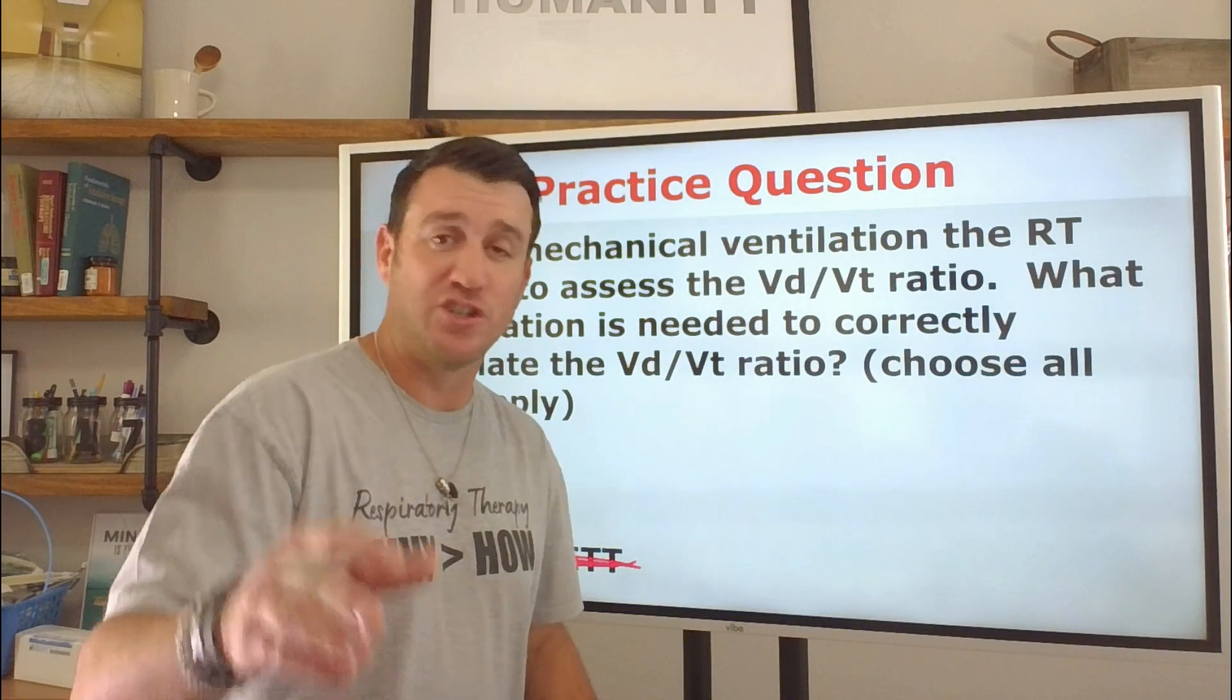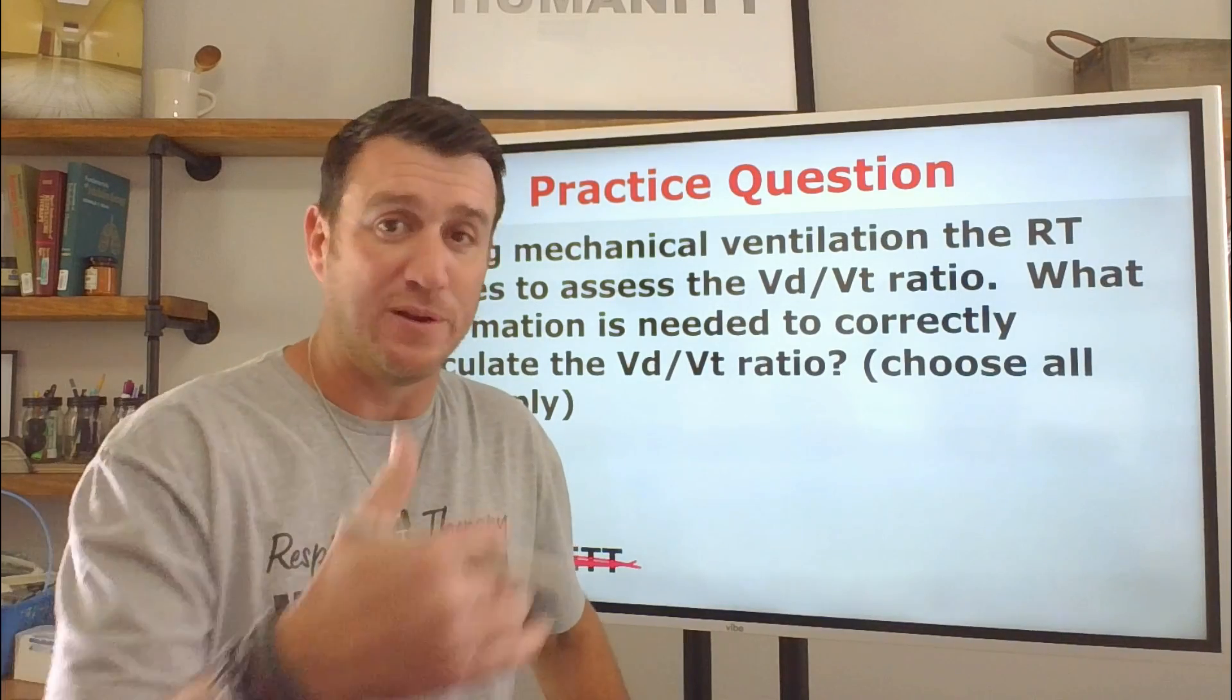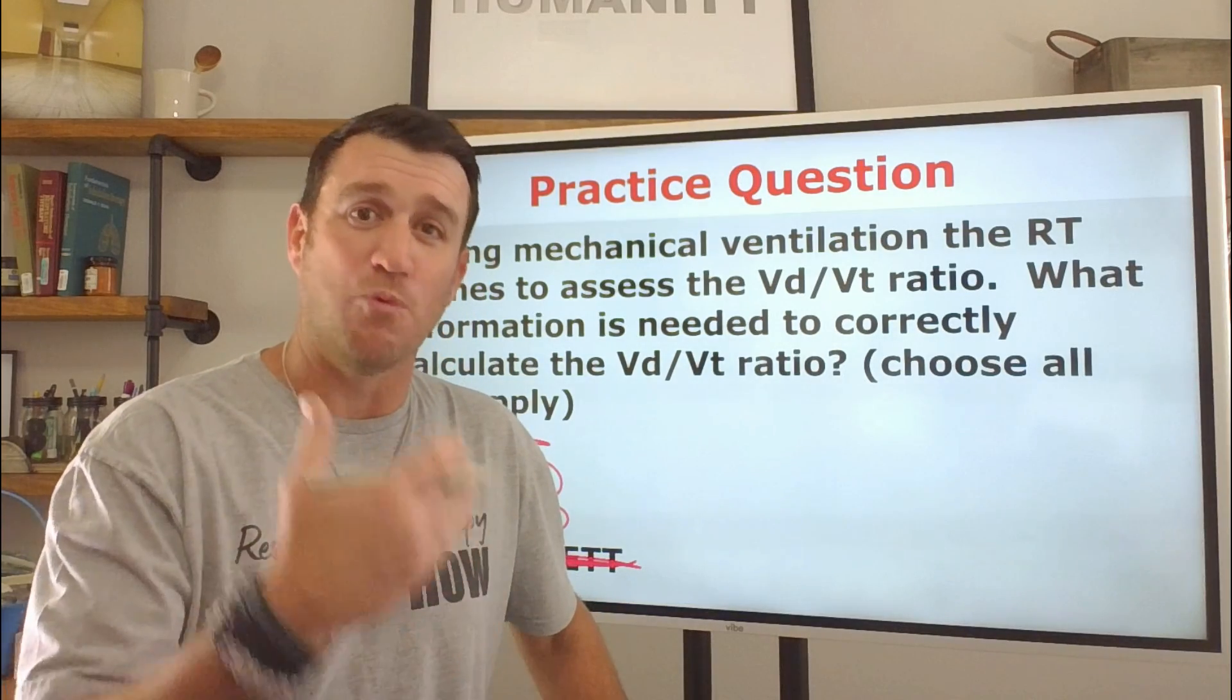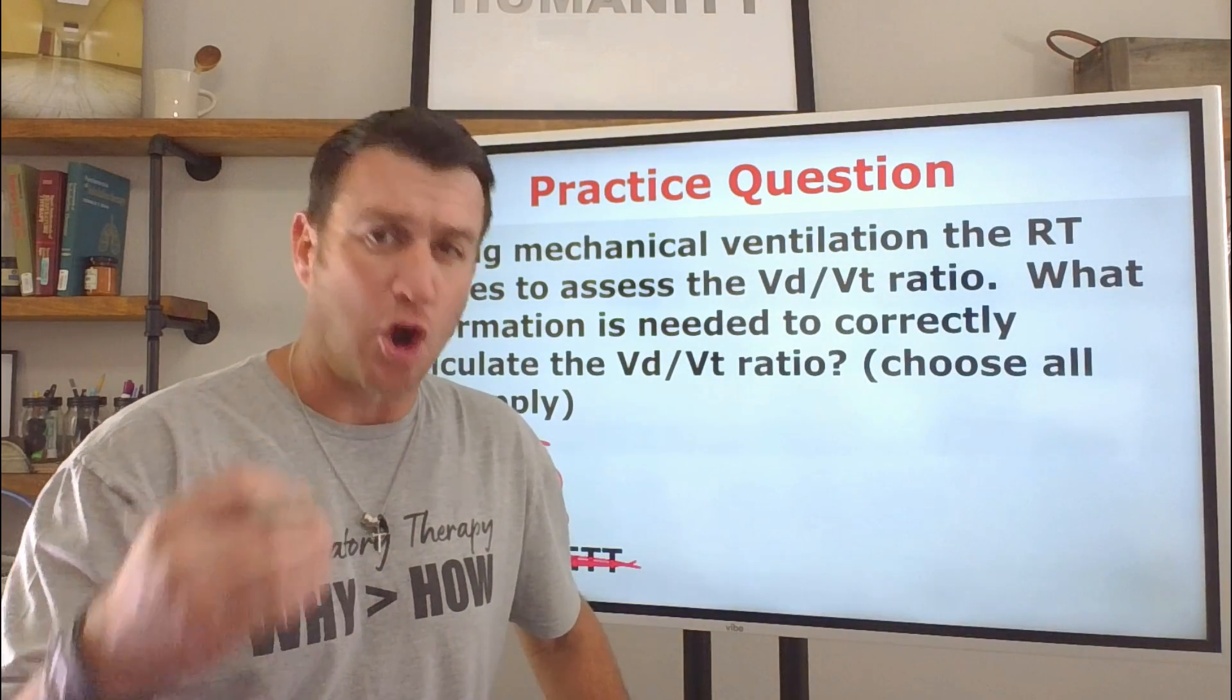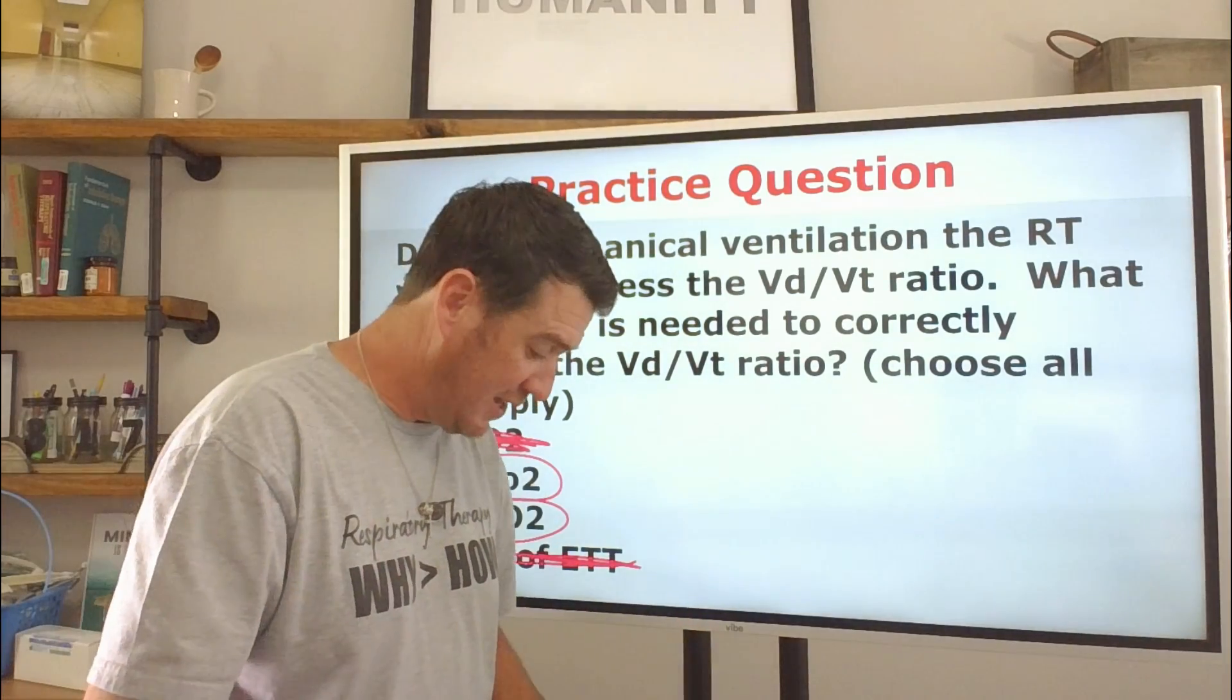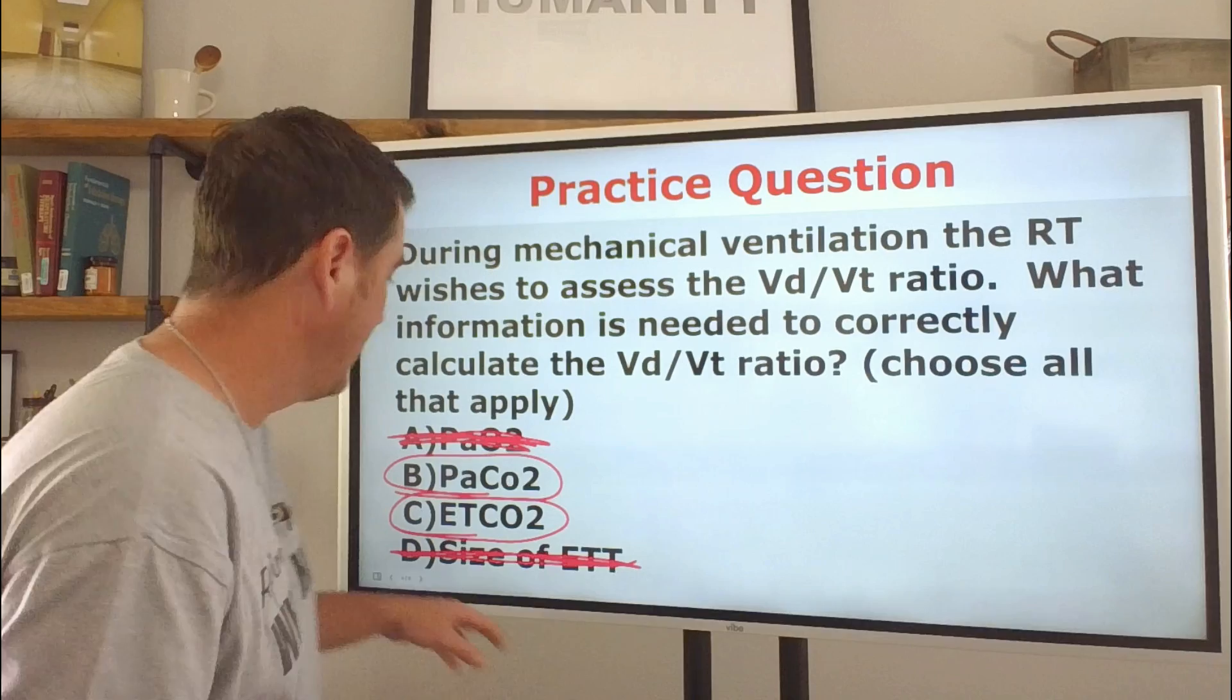And you may ask yourself, why does this matter? And I'm going to refer to the 12th edition of Egan's here, like I commonly do. And I'm just going to say it like this. A VD to VT ratio greater than 60% generally requires continuation of ventilatory support. That's why it matters. Now I'm going to take it another sentence here because this is why it really matters. Increased VD to VT in the early phase of ARDS has been associated with an increased risk of death. An increased risk of death. That's why it matters because your job as an RT is to save lives, to restore health, to fix the patients that you can fix in the appropriate amount of time.